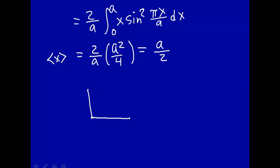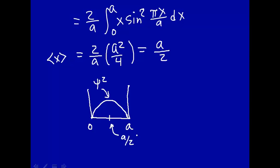Here's our 1D box, going from 0 to a. Looking at the n equal 1 state — this is the probability density psi squared. On the average, the probability density is not equal everywhere, but on the average that is compensated, so we expect the particle to be located at a over 2. That checks out.